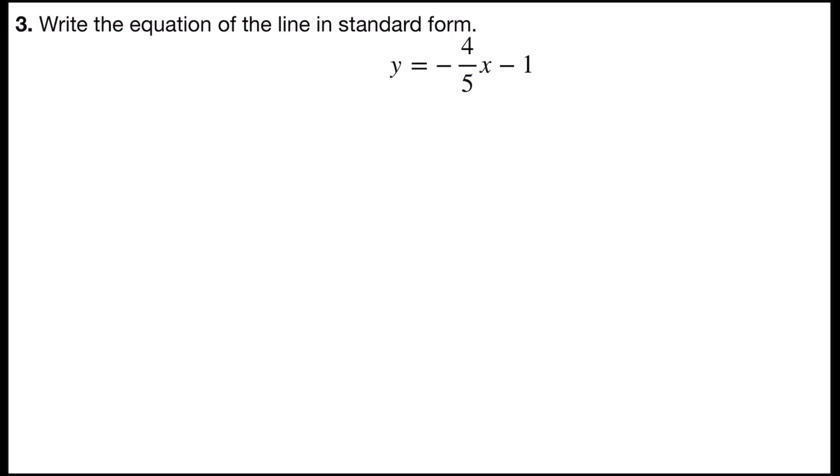Problem number three says, write the equation of the line in standard form. And the equation says y equals negative four-fifths x minus one. And that's in slope-intercept form, but we want the equation in standard form, ax plus by equals c.